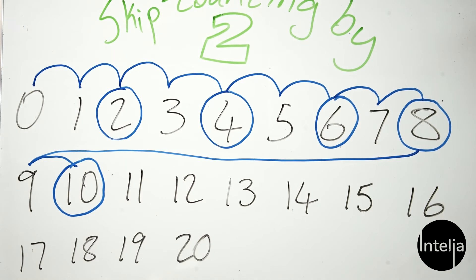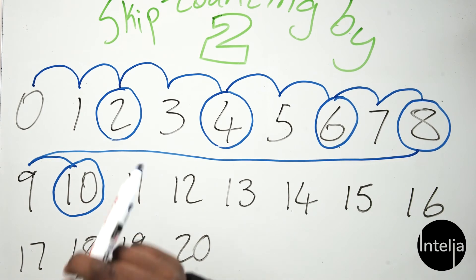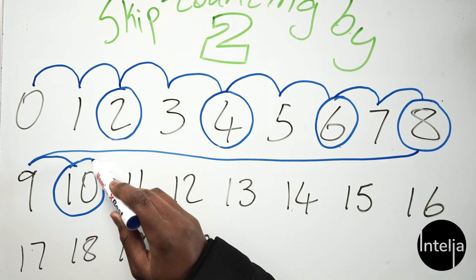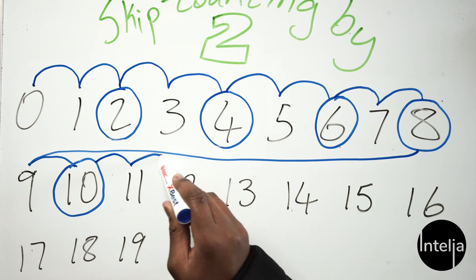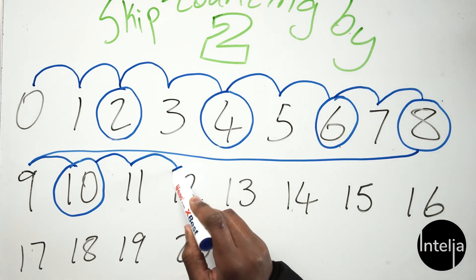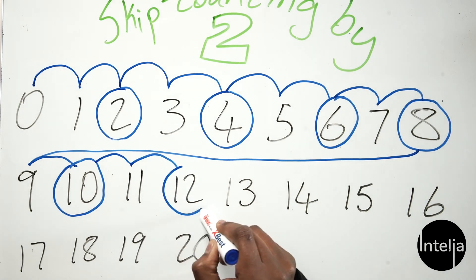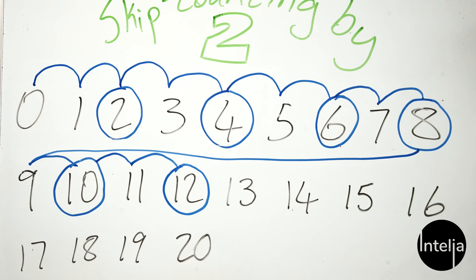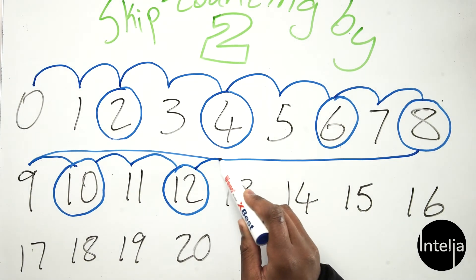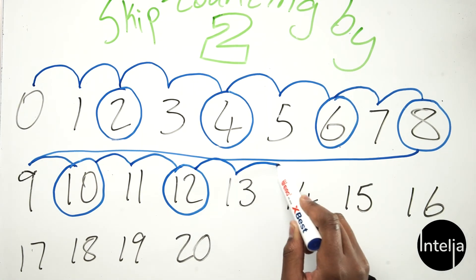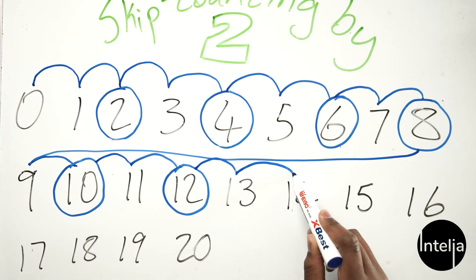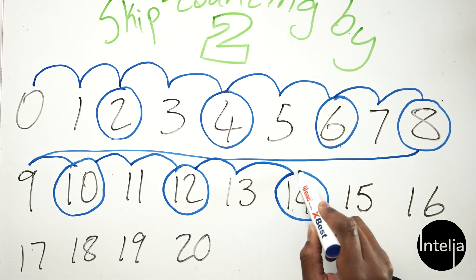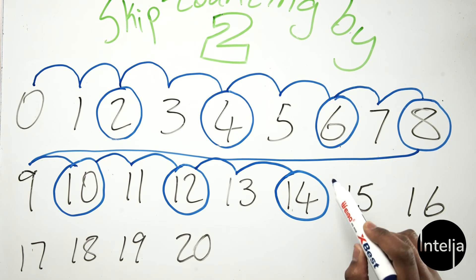Now let's start from eight and skip two times — one and two — and we land on ten. Well done! Now let's continue all the way to twenty. Skip twice — one, two — twelve.